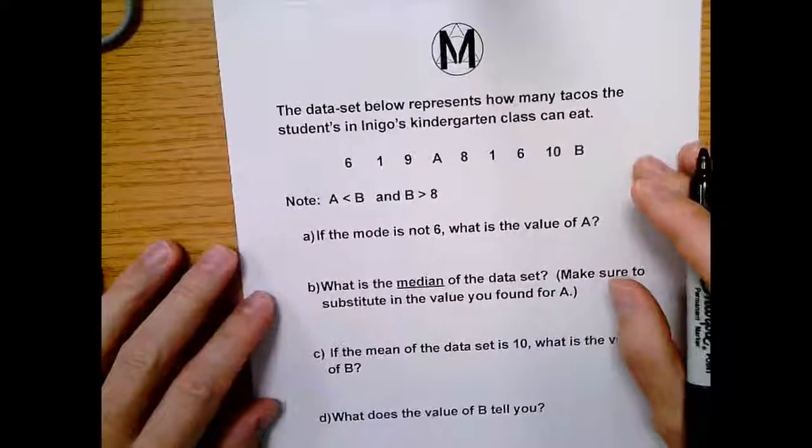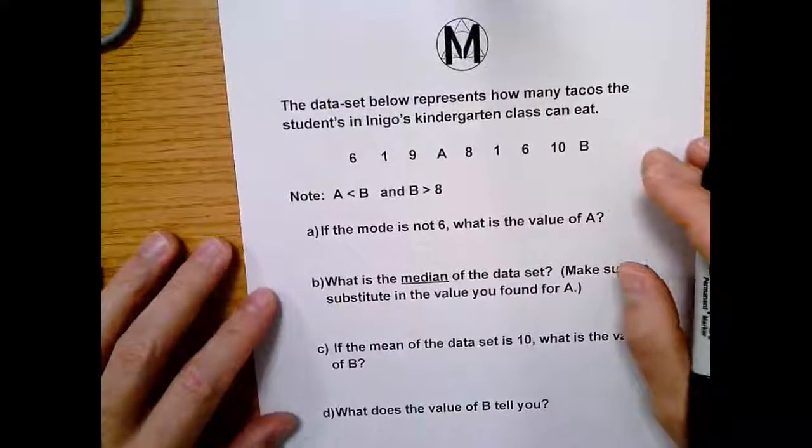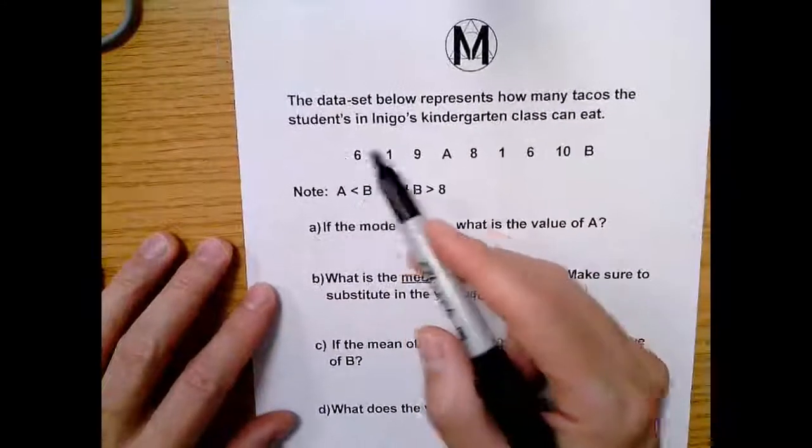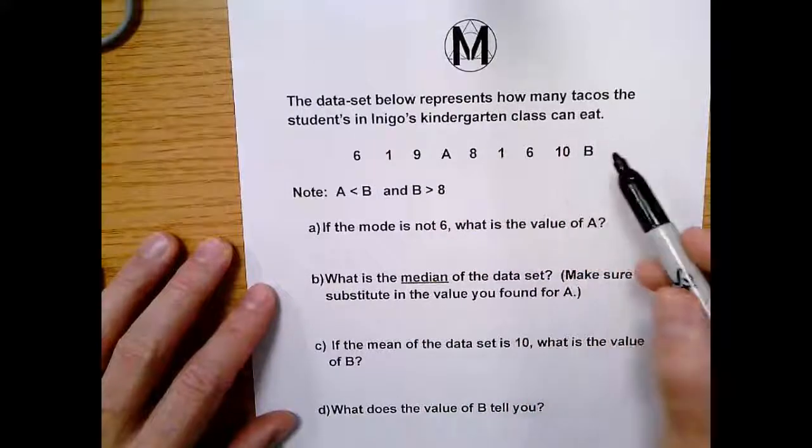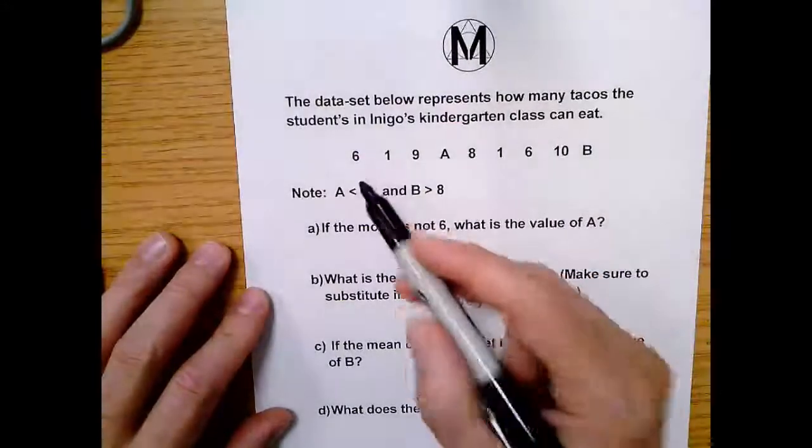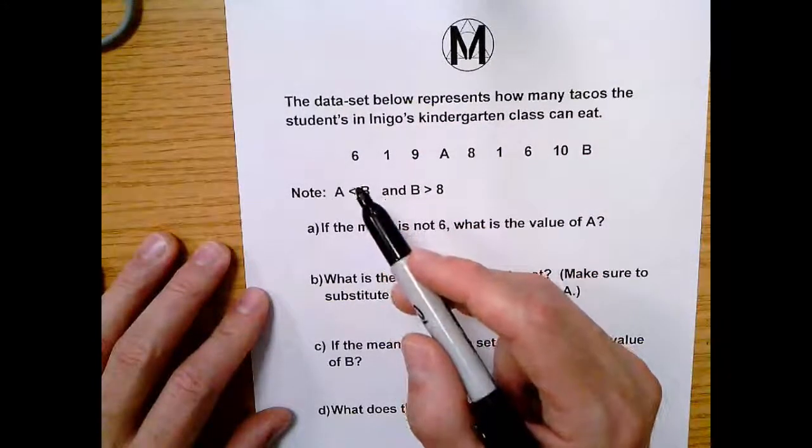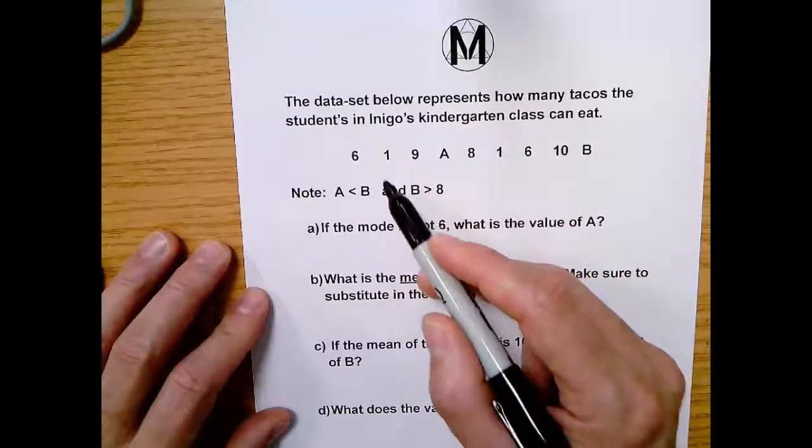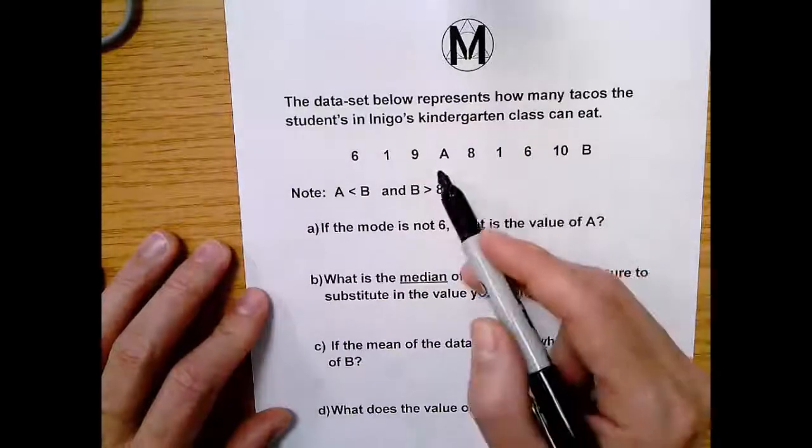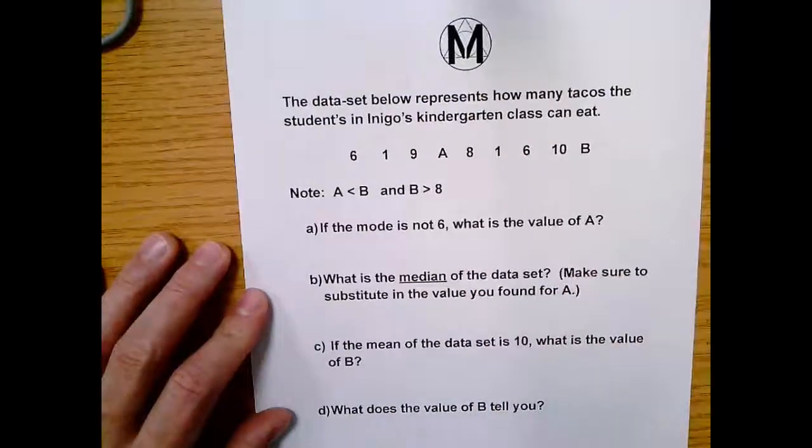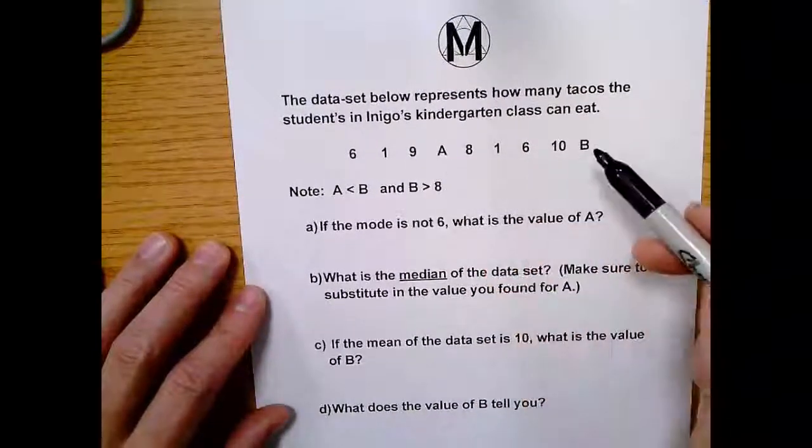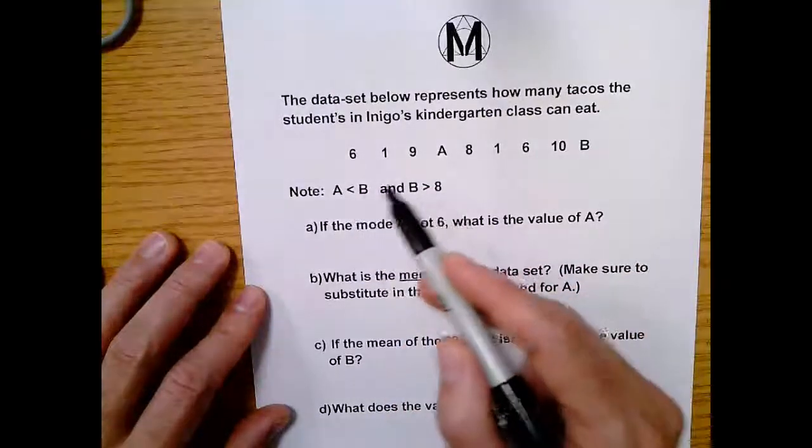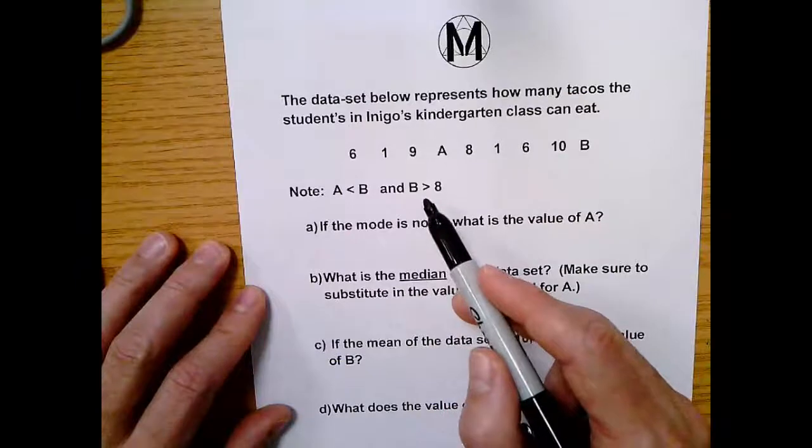Okay, let's do some mathity math. It says here, the data set below represents how many tacos the students in Inigo's kindergarten class can eat. So to be clear, each number represents how many tacos one student can eat. So this student eats six, this student eats one, and so on and so forth. And you see here we have two variables, and ultimately our goal will be to solve for those two variables. And it says, please note, A is less than B, and B will be greater than eight.